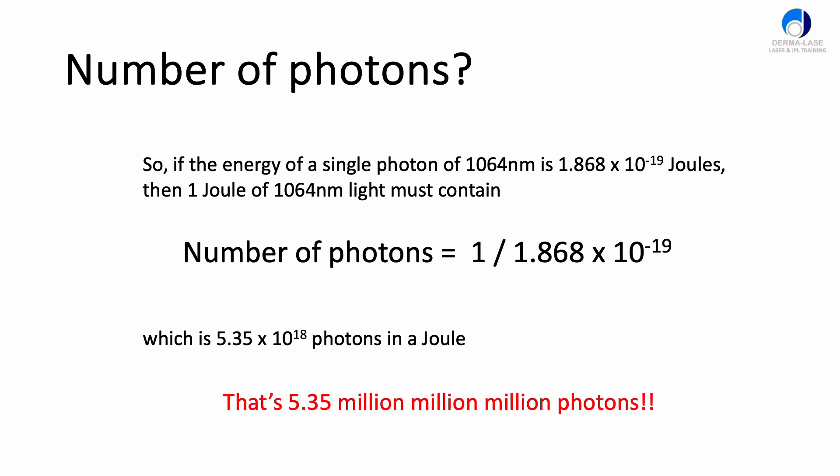This equals 5.35 times 10 to the 18 photons of 1064 nanometers in 1 joule of energy. That's 5.35 million, million, million photons. That's a lot of photons, but we can't see them because they're all tiny.